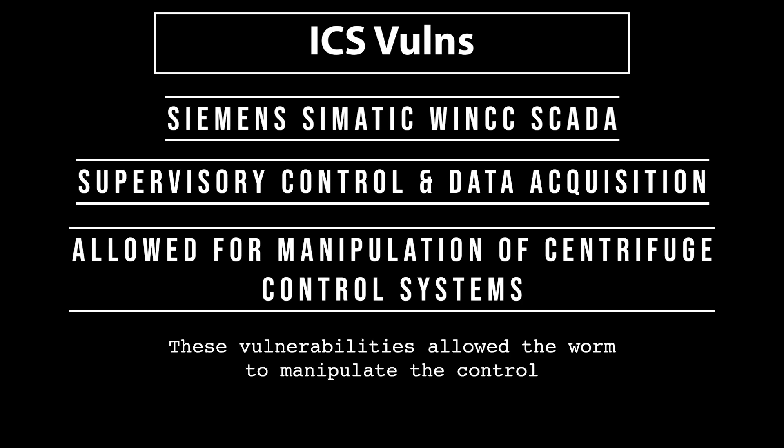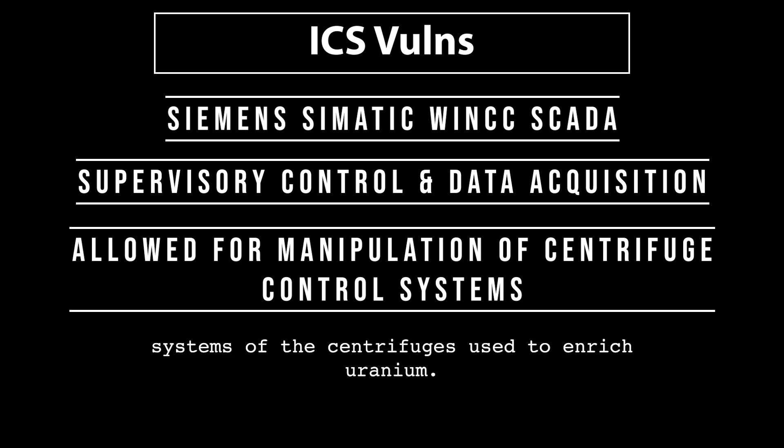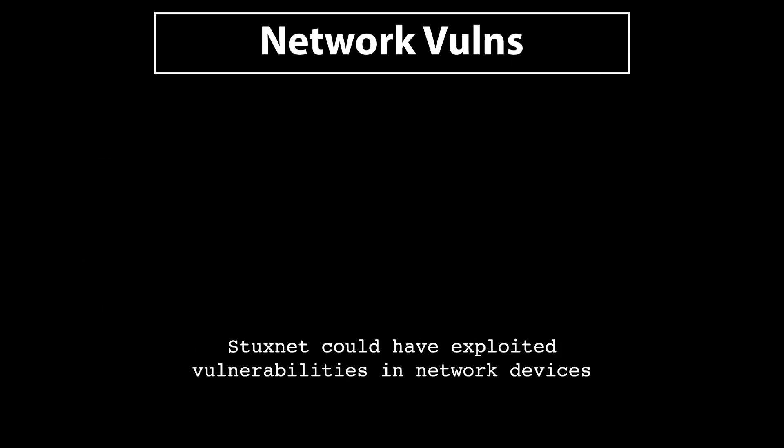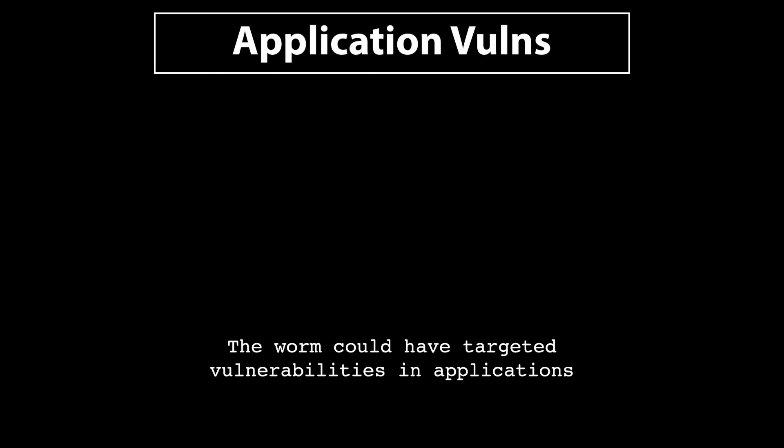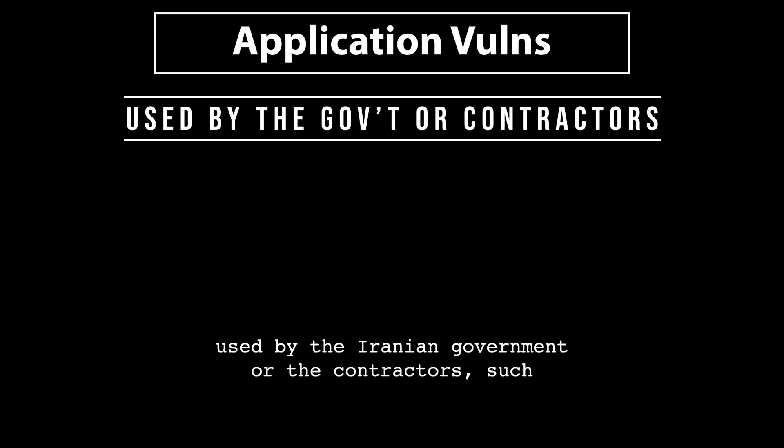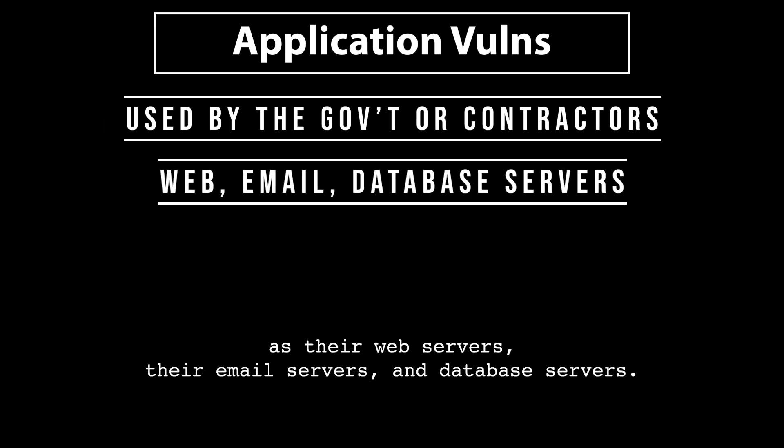These vulnerabilities allowed the worm to manipulate the control systems of the centrifuges used to enrich uranium. Stuxnet could also exploit vulnerabilities in network devices like routers, switches, and firewalls to gain access to Iranian networks. The worm could also target vulnerabilities in applications used by the Iranian government or contractors, such as web servers, email servers, and database servers.